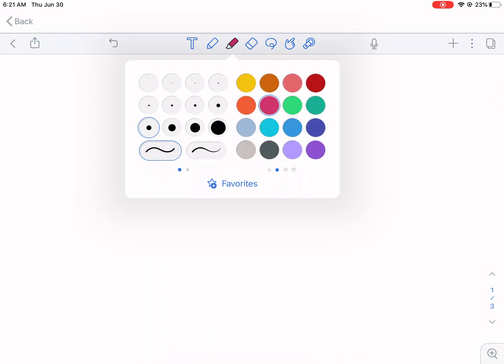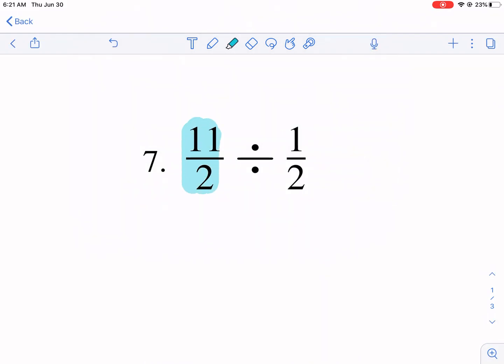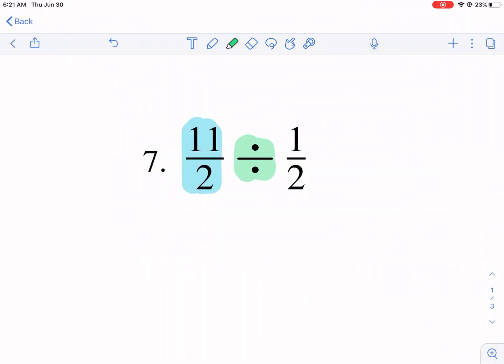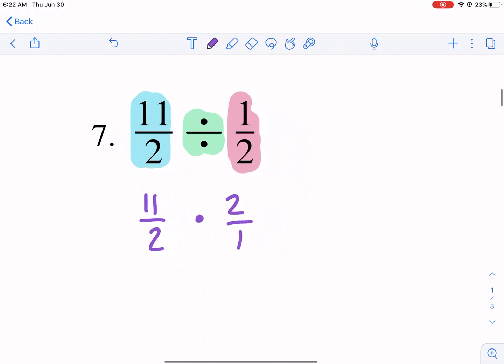So let's go ahead and apply that principle here. We're going to keep this first fraction. This is number seven. We're going to keep this first fraction. We're going to change it from division into multiplication. And then we are going to flip this to become the reciprocal. So let's go ahead and do that process. So we have 11 over two. We're going to keep the same. We're going to change this to multiplication. And then we are going to flip this fraction to become two over one. Keep, change, and flip.